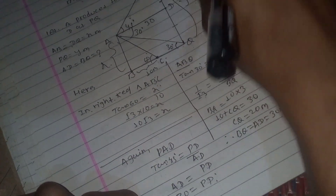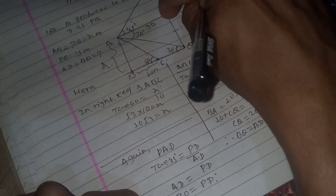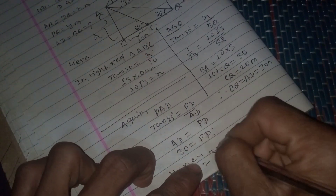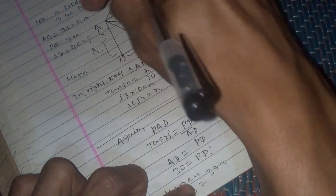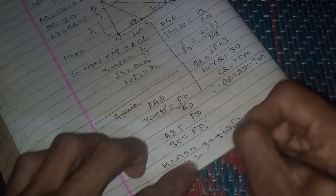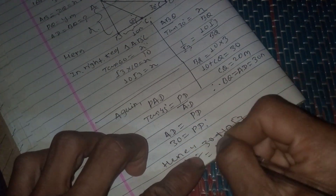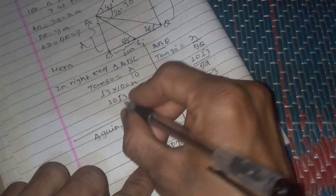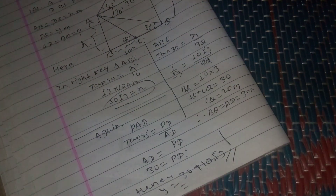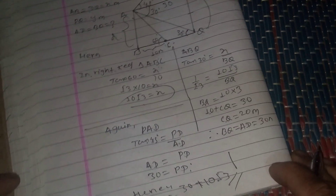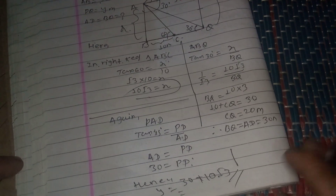Hence the height of the tower y equals PD plus DQ equals 30 plus 10 root 3. The height of the column x equals 10 root 3 meters. That's all for today's video.